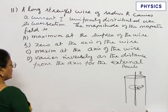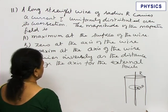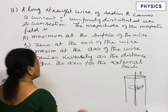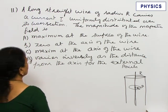First of all, let us calculate the magnetic field at a point inside the wire, then outside the wire. From that, we can conclude which of this statement is correct.